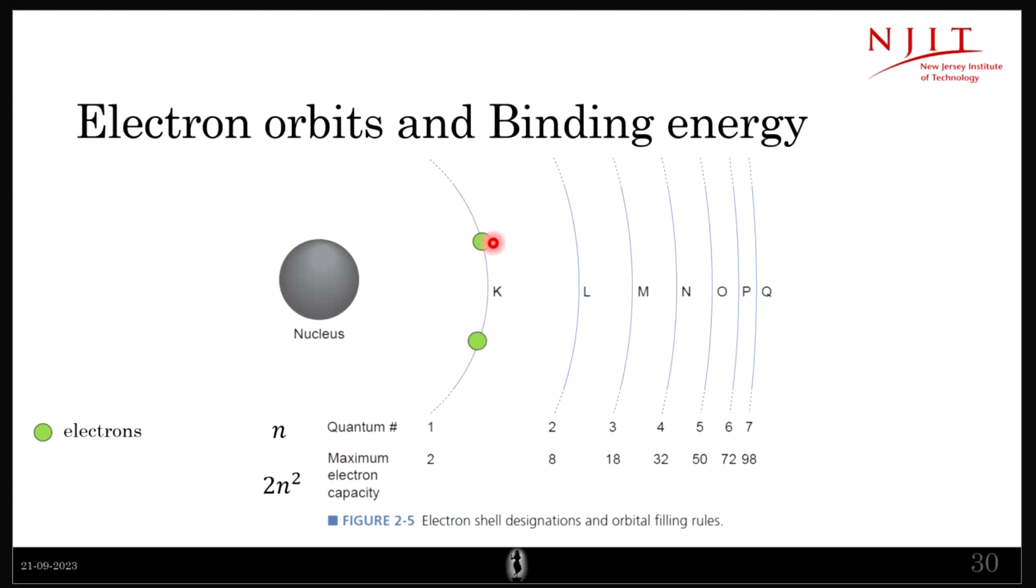Based on that, when n is equal to 1, you just put n is equal to 1 over here and you get 2 into 1² that is 2. So you just have two electrons, or maximum you can just have two electrons in the first shell. And so on for the second you can have 8, for the third you can have 18, and so on.